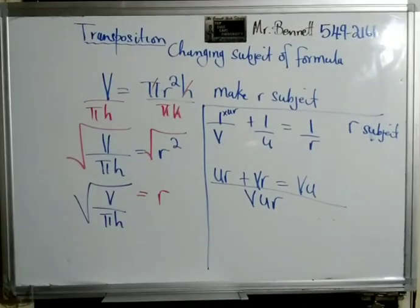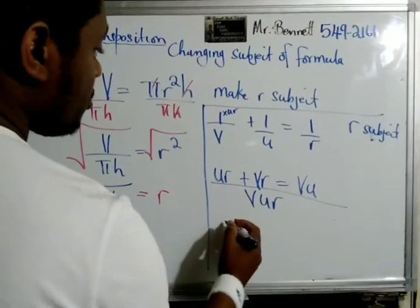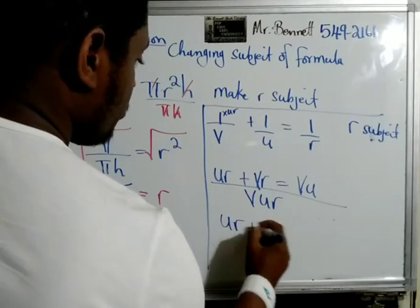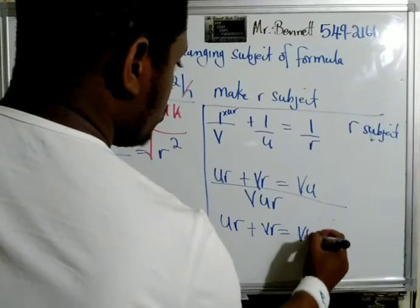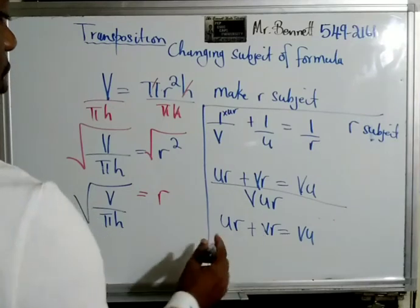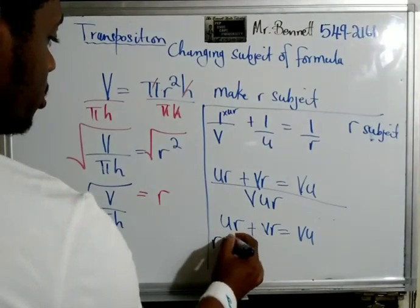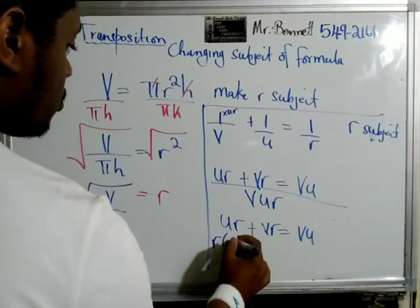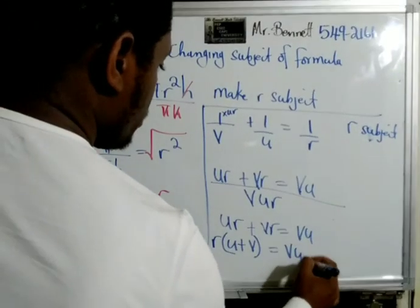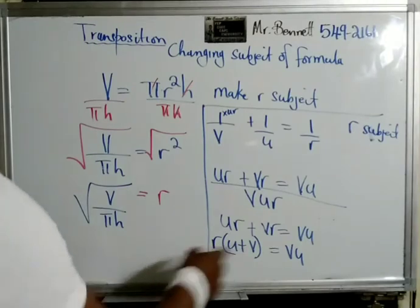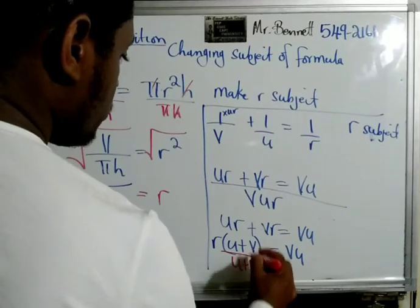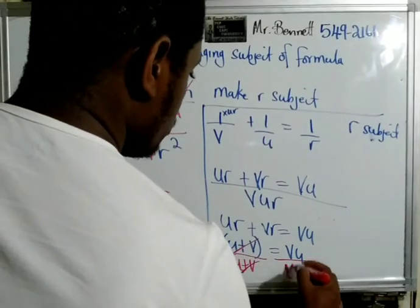When we reach this point we can equate the numerators: ur plus vr is equal to vu. We have r in both terms on the left, so we factor out r: r times (u plus v) equals vu. The opposite of times is divide, so we divide both sides by (u plus v) to isolate r.